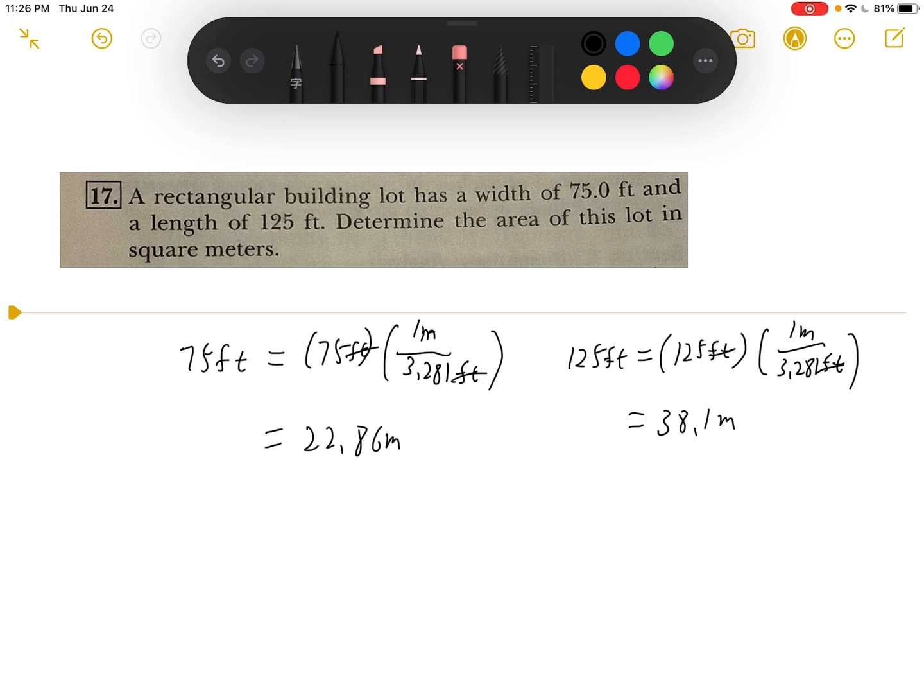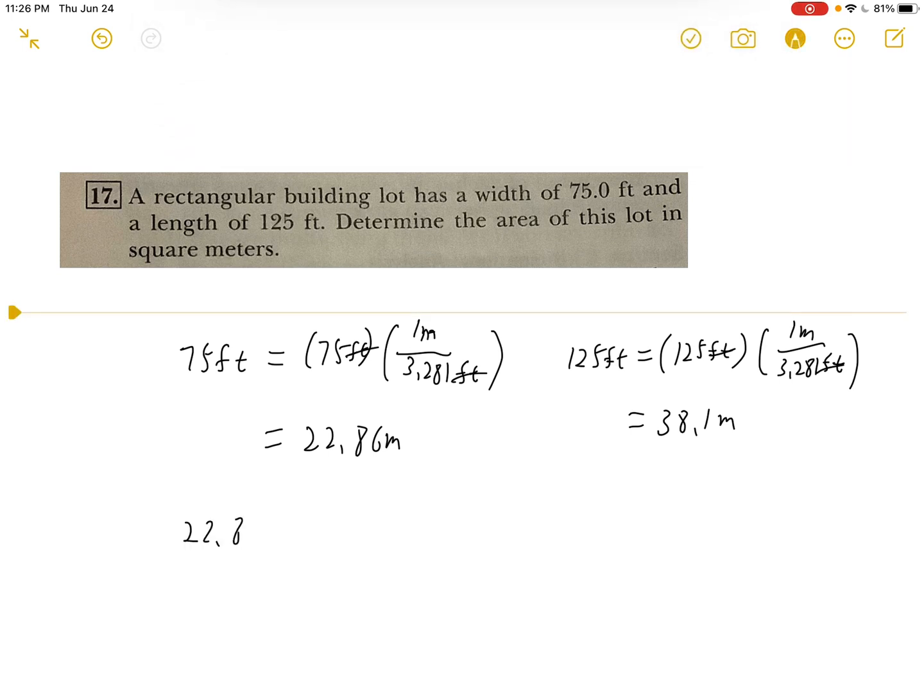this together, length times the width: 22.86 times 38.1. And we will have 870.9 square meters, and this will be the area.